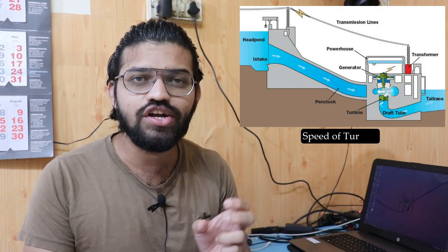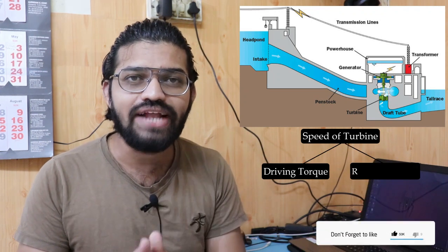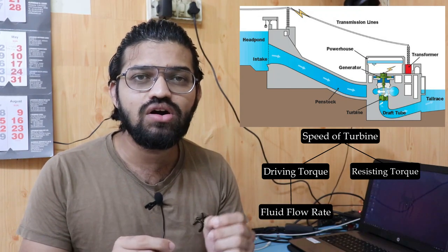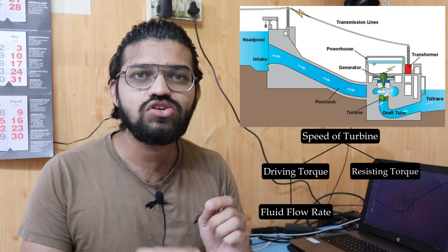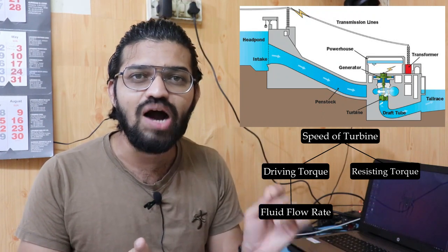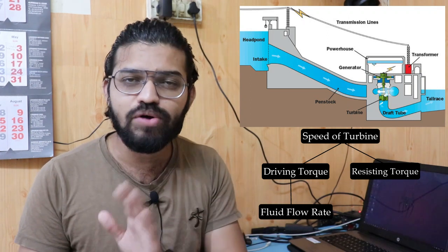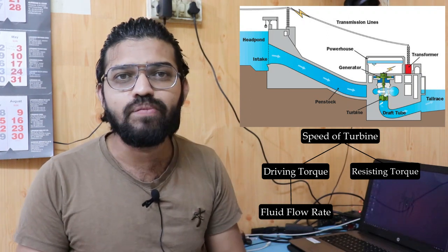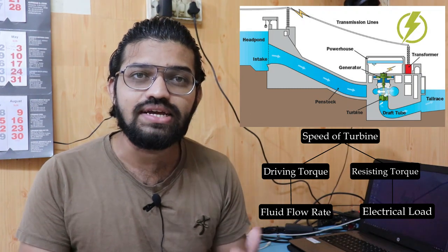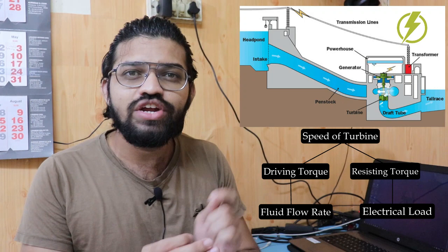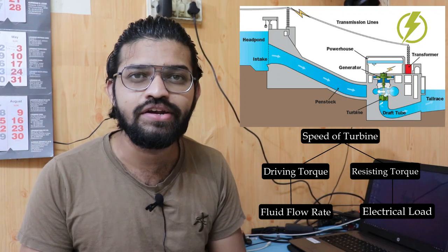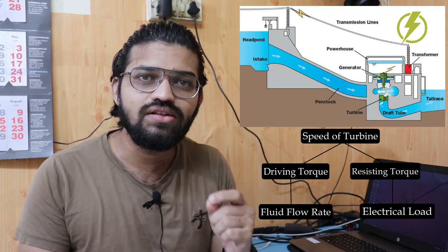The speed of the turbine depends upon two parameters: driving torque and resisting torque. The driving torque depends on the amount of fluid flowing over the buckets of the Pelton wheel or blades of the turbine. The resisting torque is the electrical load — when the electrical load increases or decreases, it affects the resisting torque. We need to balance driving torque and resisting torque to maintain a constant speed.